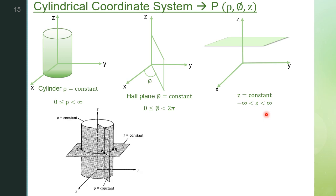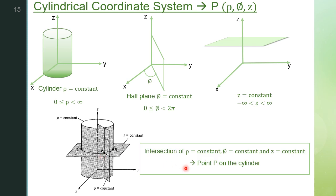If we make the three planes intersect, we get point P in the cylindrical coordinate system. The cylinder of constant radius ρ, the plane with constant value of φ, and the plane with constant value of z — their point of intersection gives a point along the cylinder. z denotes the height of the point from the xy plane.